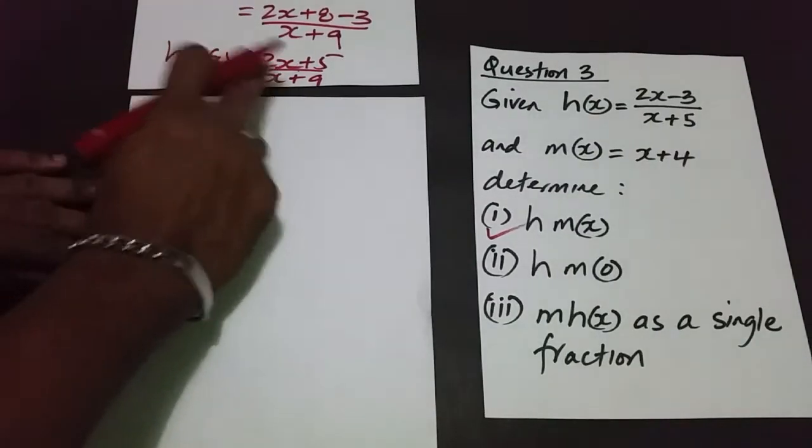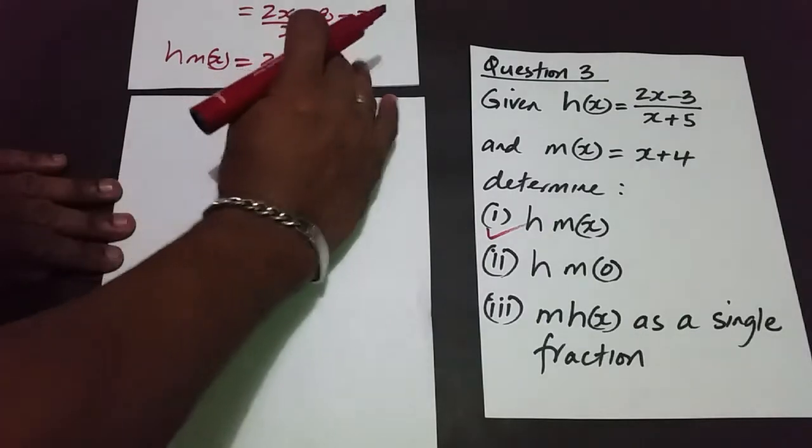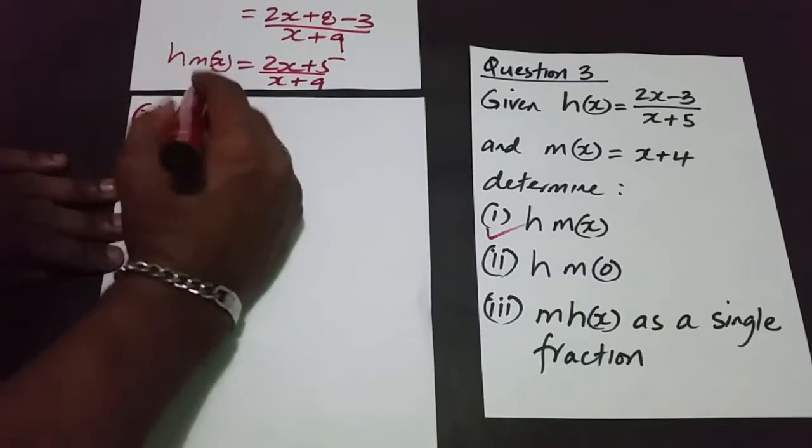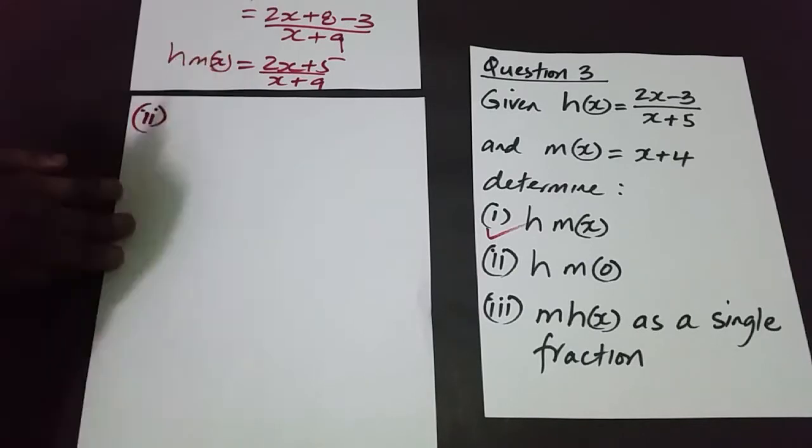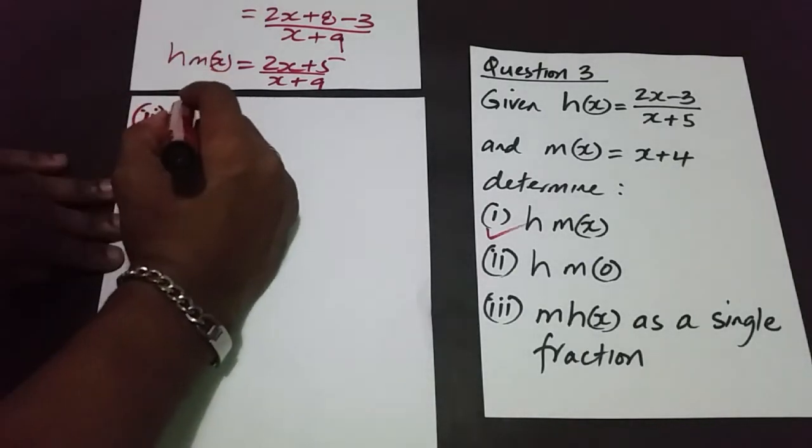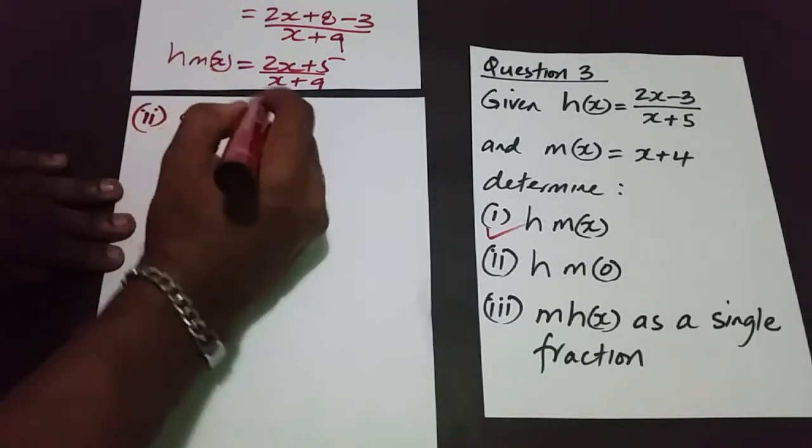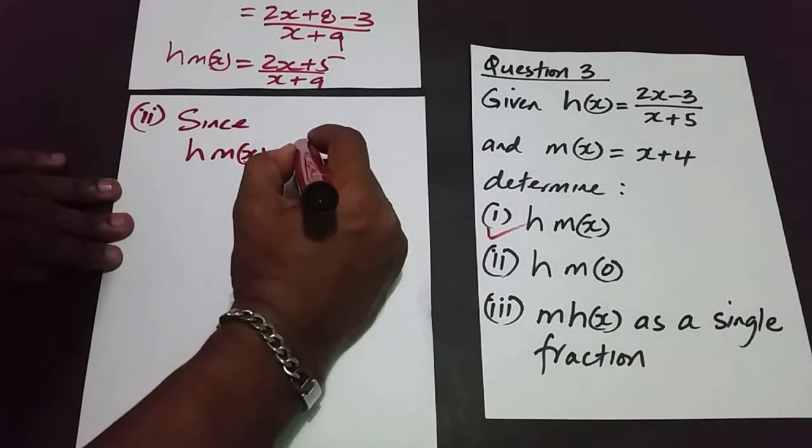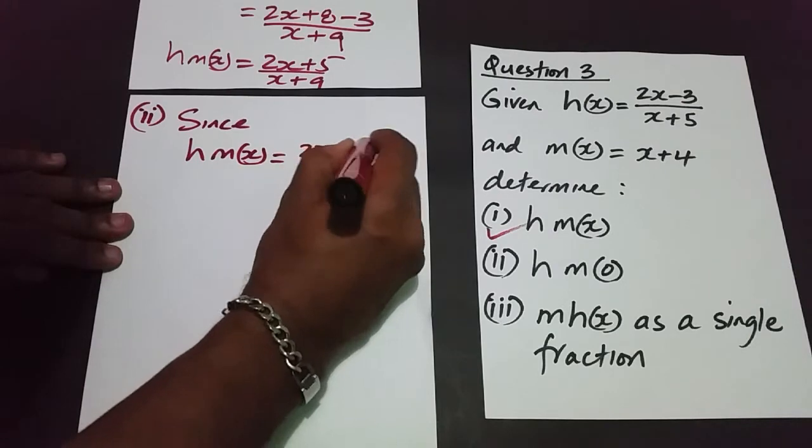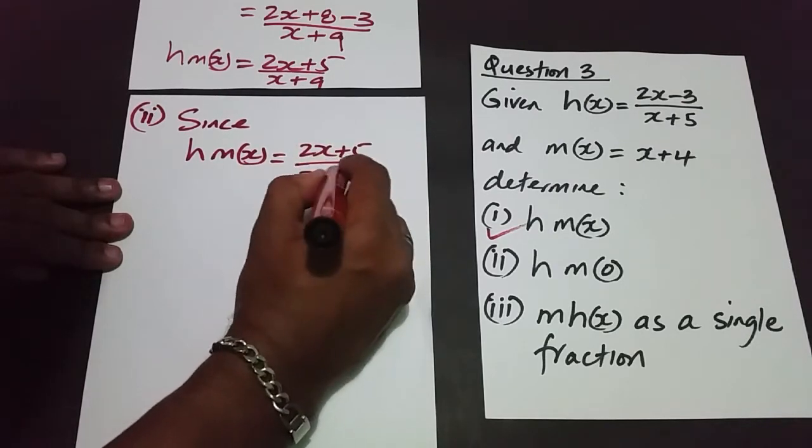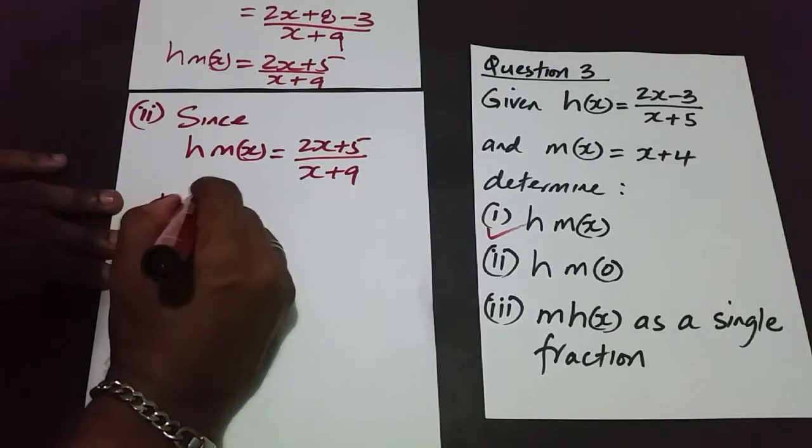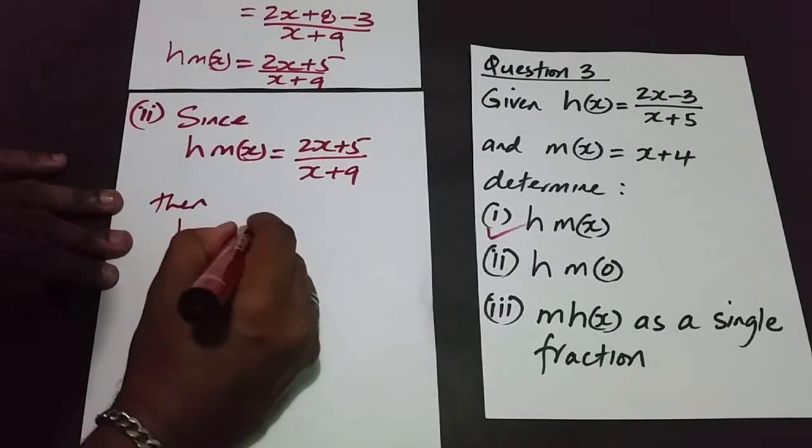So I'm using h of m of x to find h of m of 0. So in part two, since h of m of x is equal to 2x plus 5 over x plus 9, then h of m of 0...